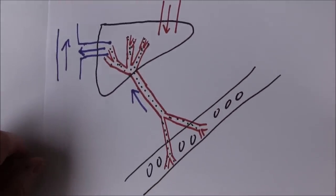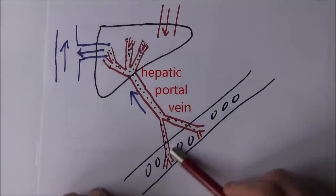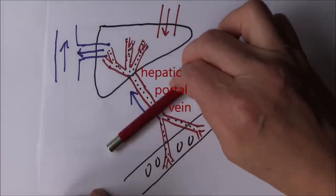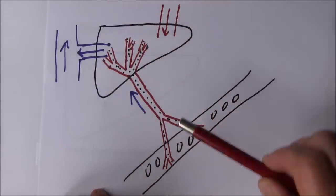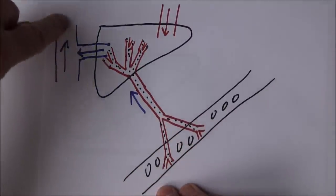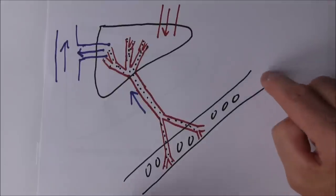Here we have the gastrointestinal tract taking blood directly to the liver via the hepatic portal vein before that blood is finally discharged into the systemic circulation.